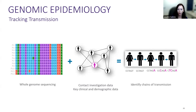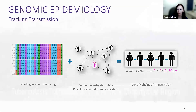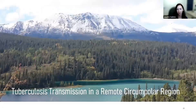If only the data always lined up nicely so you could easily see each mutation arising person to person and identify chains of transmission. Unfortunately, it doesn't often work out that cleanly. But I am going to show you an example where we actually have a pretty good idea of the transmission.